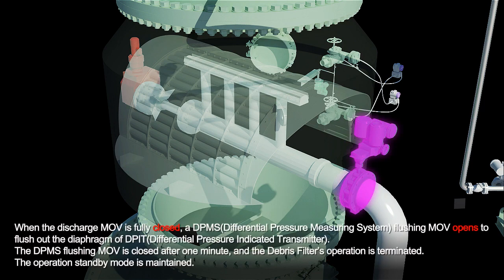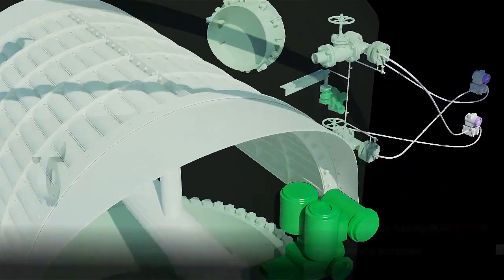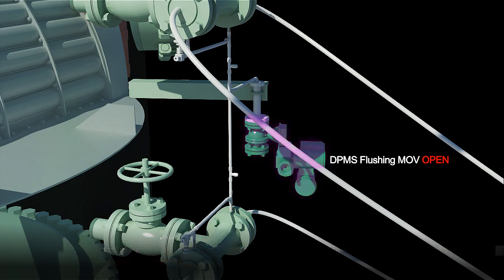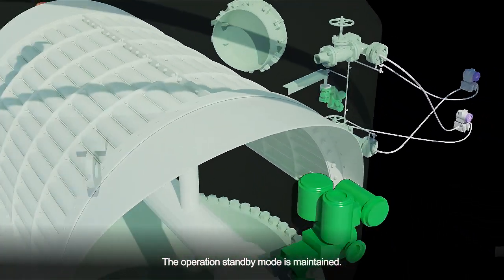When the discharge MOV is fully closed, a DP-MS flushing MOV opens to flush out the diaphragm of DPIT. The DP-MS flushing MOV is closed after one minute and the debris filter's operation is terminated. The operation standby mode is maintained.